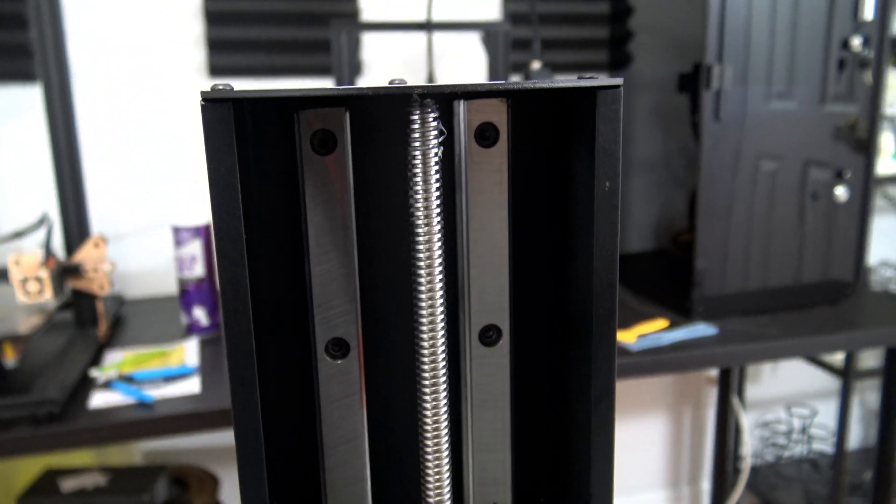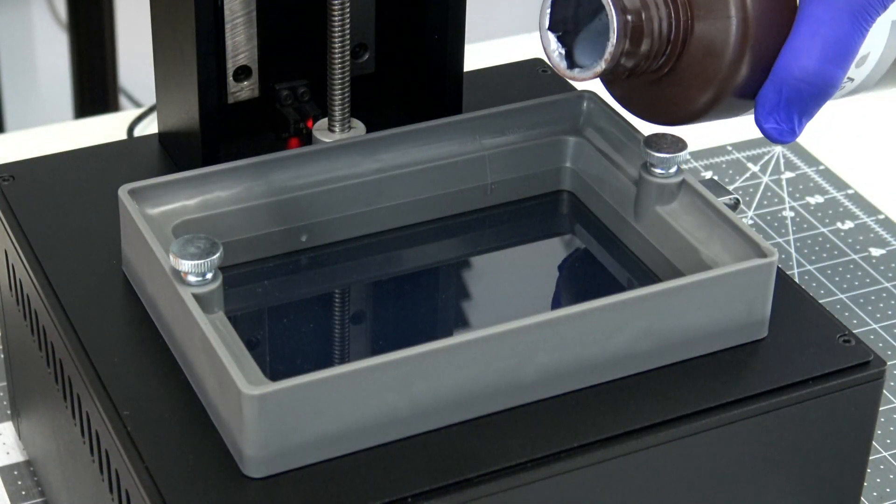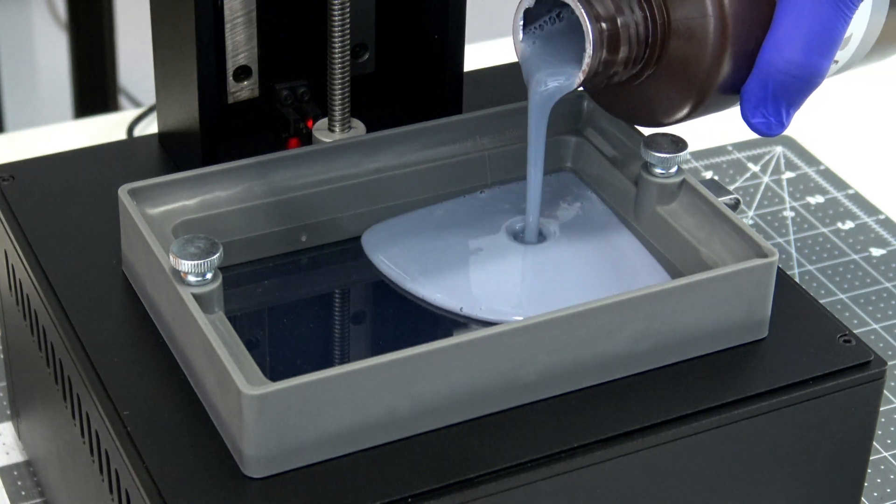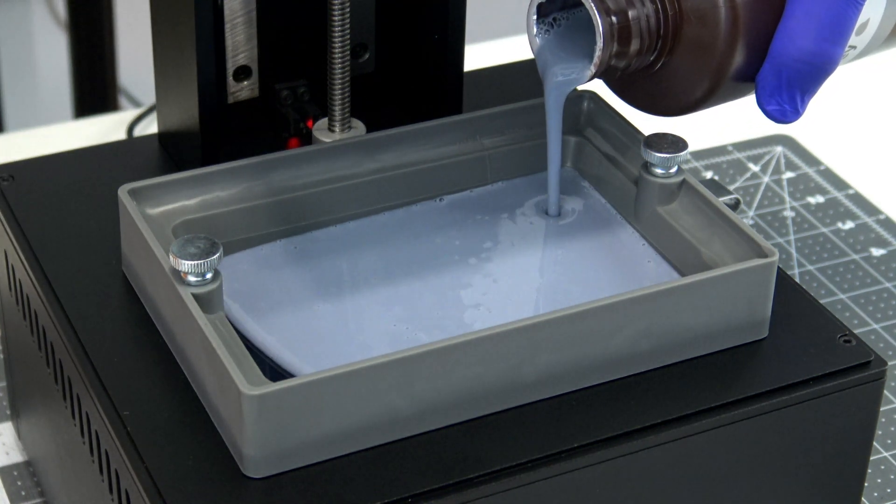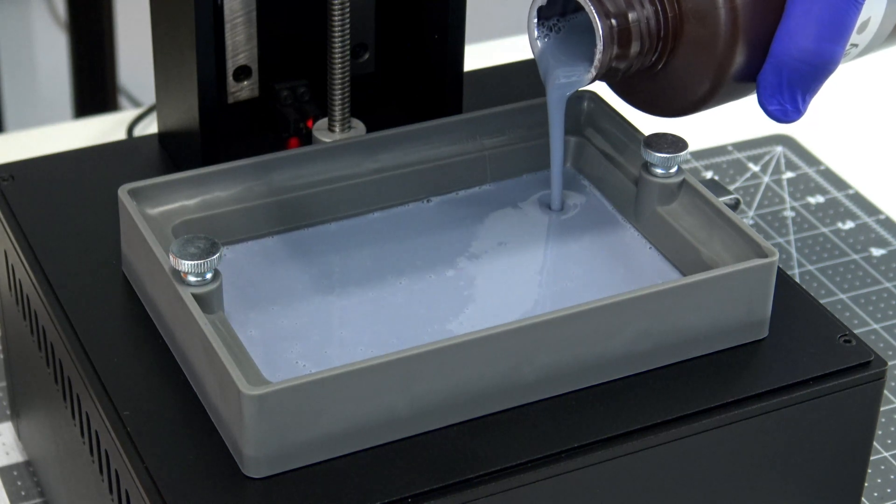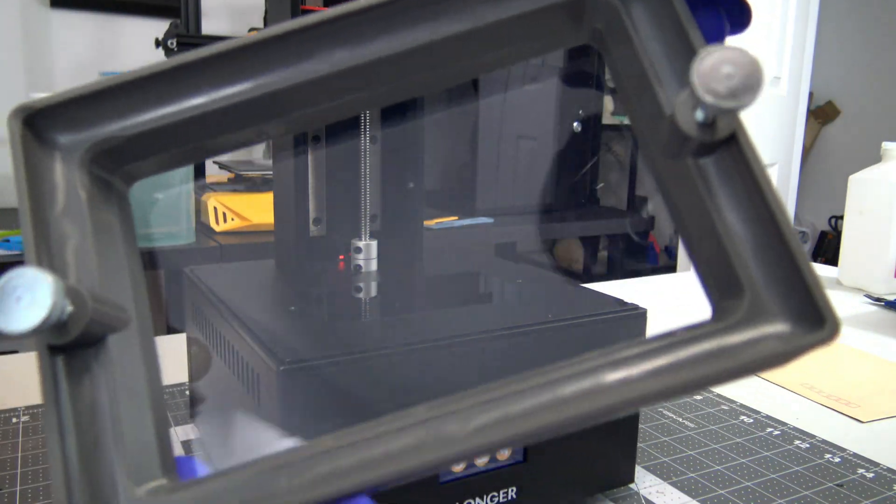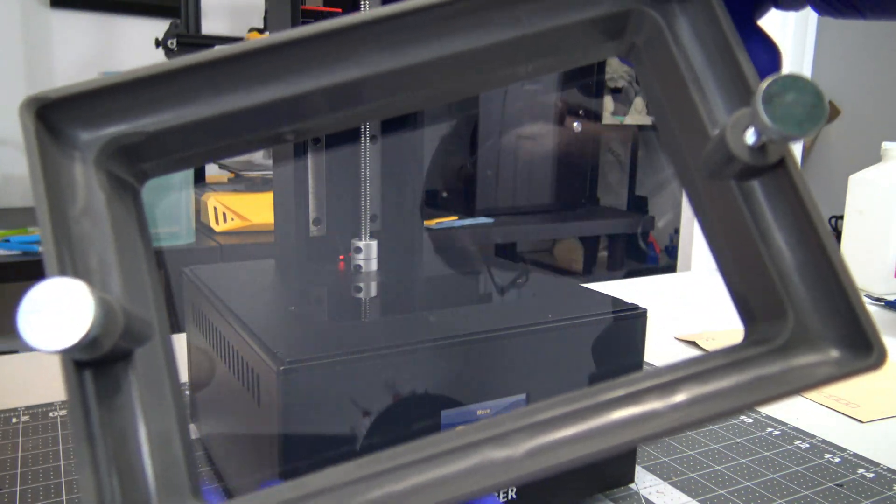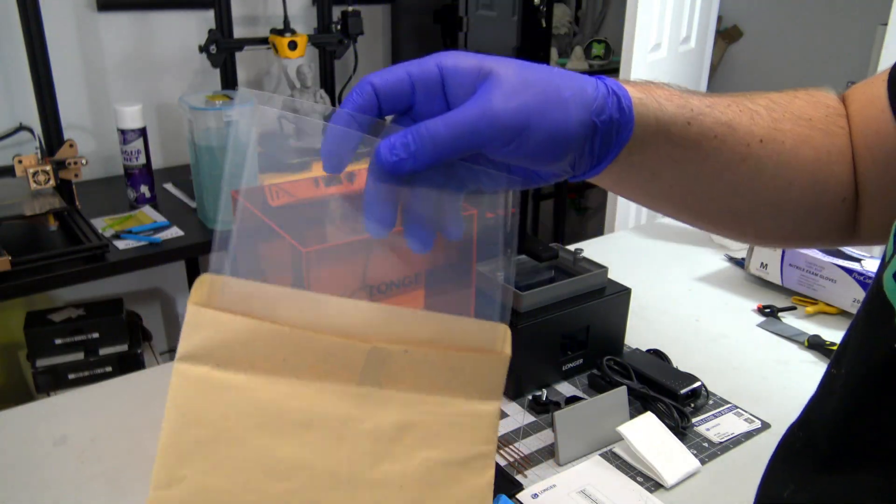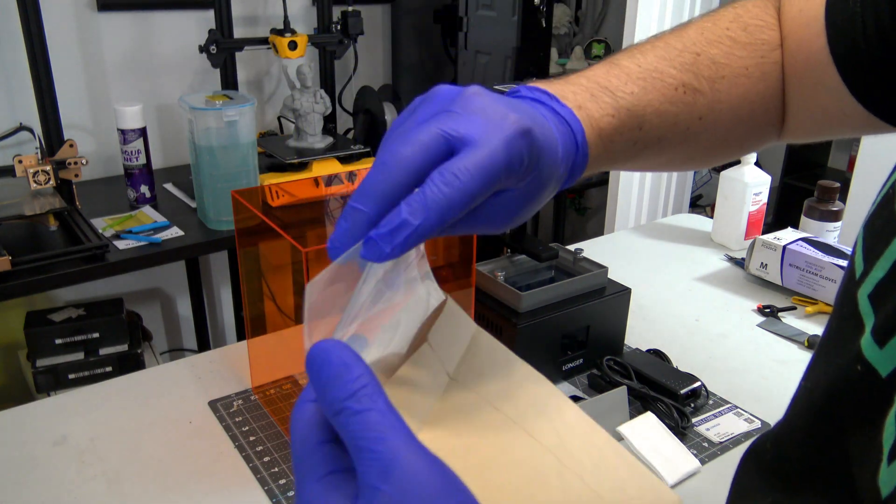The Orange 4K uses the same resin vat as its little sister, the Longer Orange 30. I like the design of the plastic vat. It has an integrated scale, which makes it easy to see how much resin you have remaining, and it also helps not to overfill the tank and spill resin everywhere. The bottom of the vat is a standard FEP release film. Vat film does wear out over time, but a couple replacement sheets are included with the printer. The vats also come with a plastic cover to make storage easy.